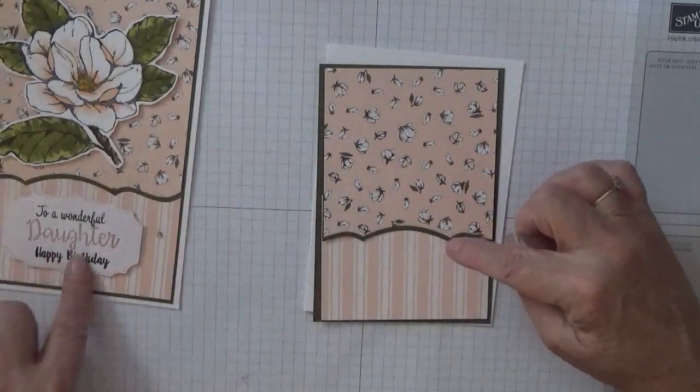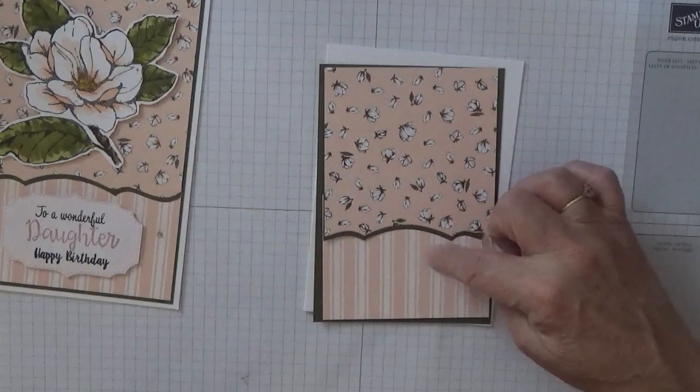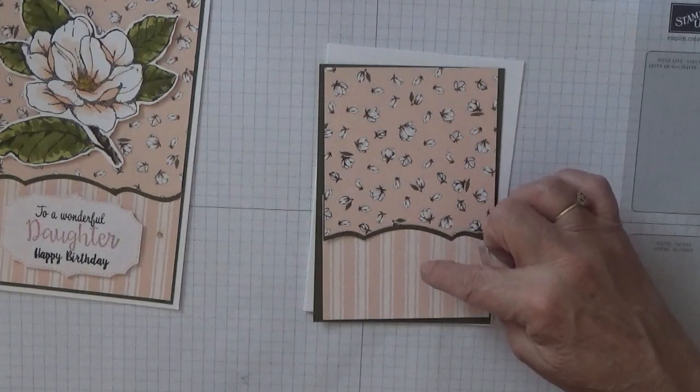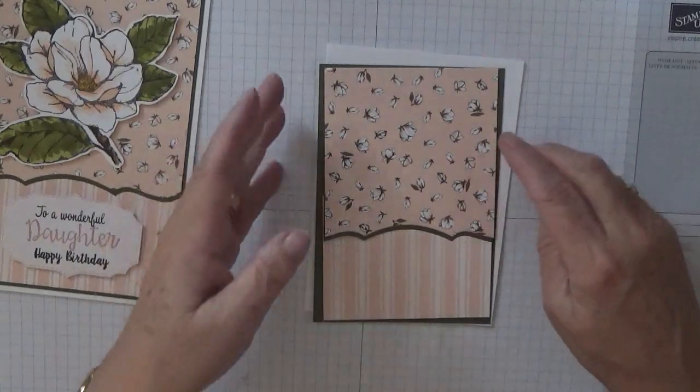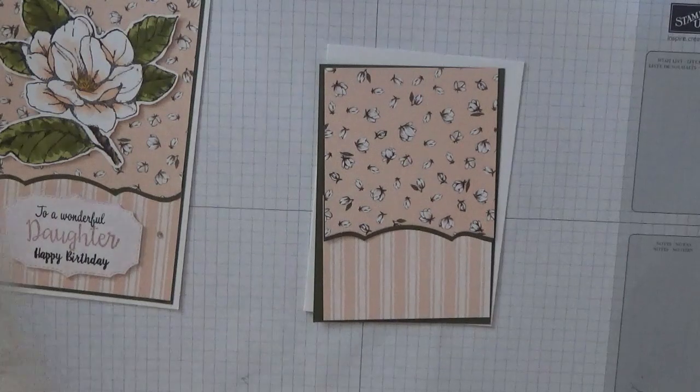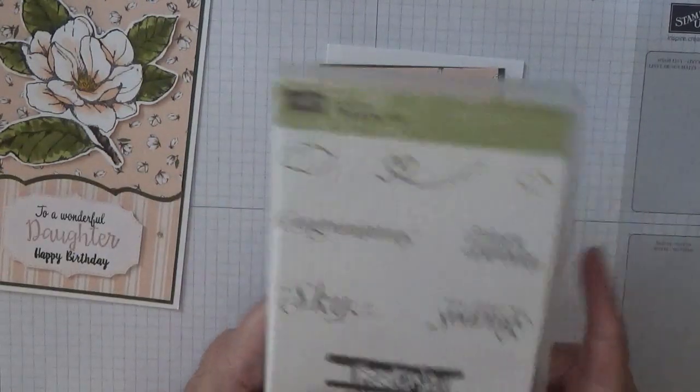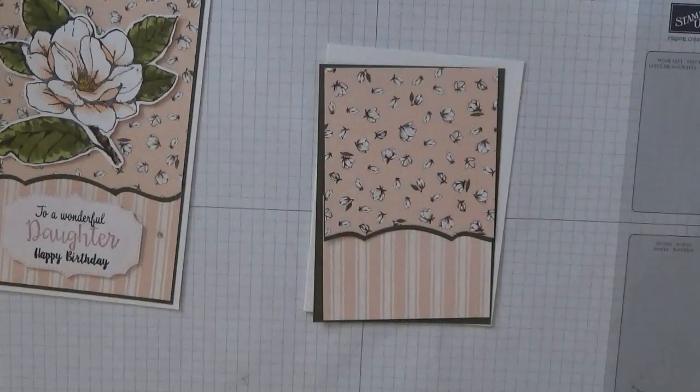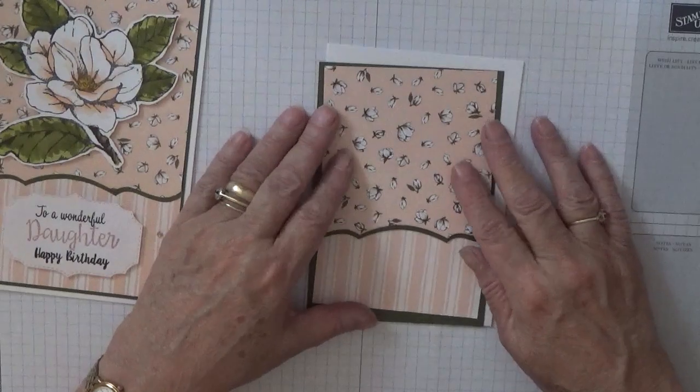Now the sentiment. Obviously I don't want to make another daughter card. I am just going to put happy birthday and use the pretty label punch and punch a label out. And the happy birthday is coming from my favourite one of all times. Sky's the limit. A really, really old one but I'm not getting rid of it because I do like that happy birthday. But saying that,